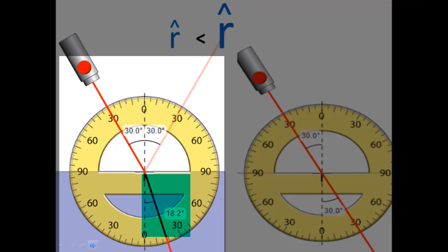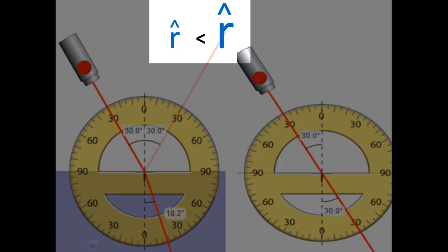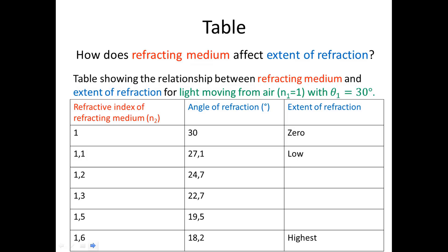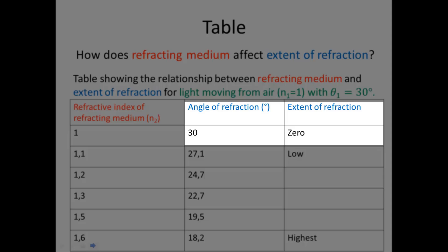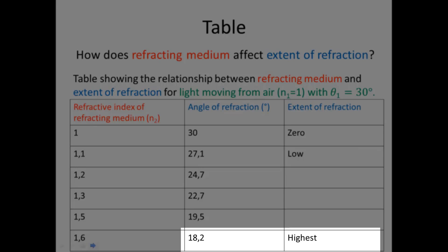The angle of refraction of 18.2 degrees is a smaller number than 30 degrees, but the 18.2 case has bending while the 30-degree case has none. For light refracted towards the normal, a smaller angle of refraction corresponds to a greater extent of refraction. So an angle of refraction of 30 degrees means zero refraction, 27.1 degrees shows low refraction, and 18.2 degrees — the smallest value — corresponds to the highest extent of refraction.